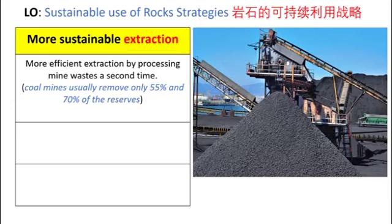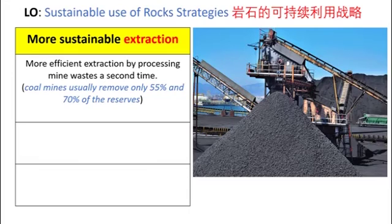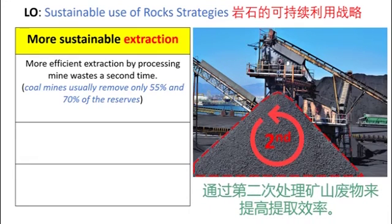We have two main strategies to achieve the sustainable use of rocks and minerals. Firstly, we can think about extraction — how can we mine these resources more efficiently? On average, underground coal mines only remove about 55 to 70% of the coal present in a given reserve, mainly due to safety and economic concerns, meaning the remaining 30 to 45% was too expensive to extract. However, due to improvements in extraction efficiency, many mine wastes are now being processed a second time, allowing valuable minerals to be recovered. This process can also be assisted through chemical and biological treatments.